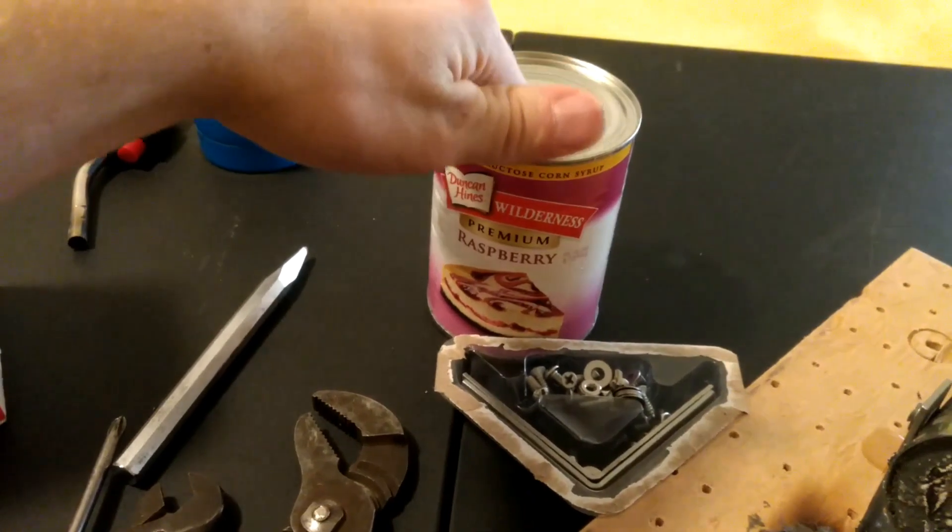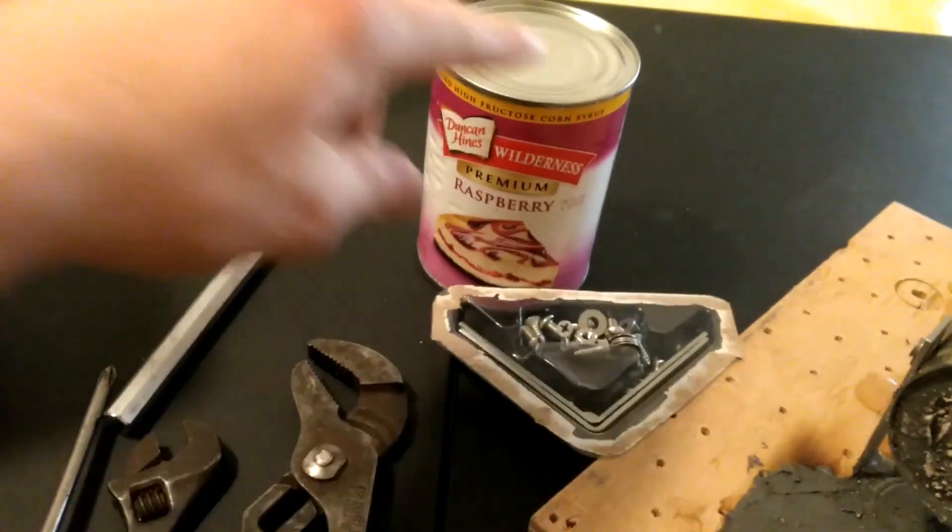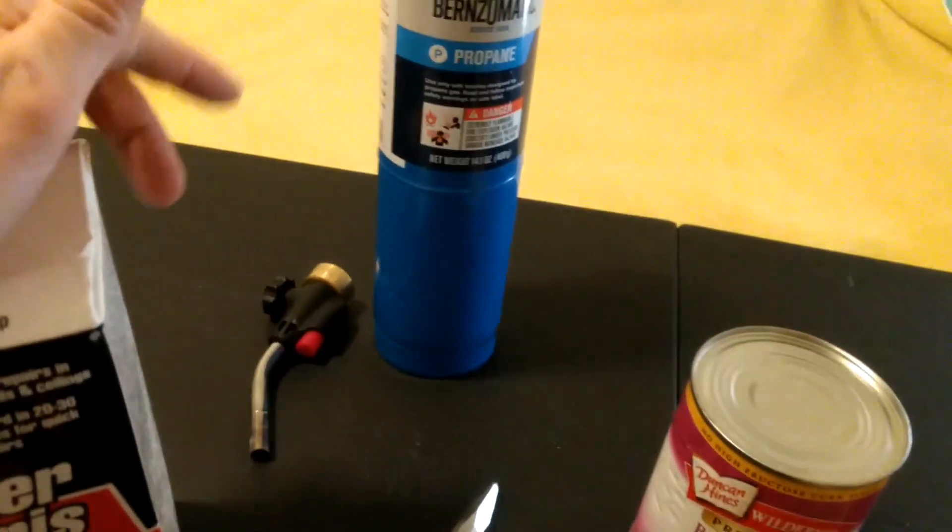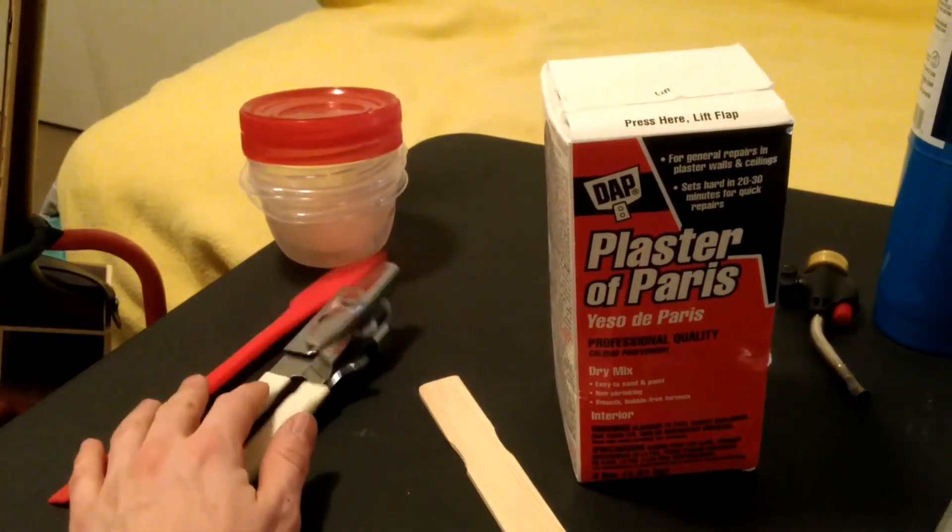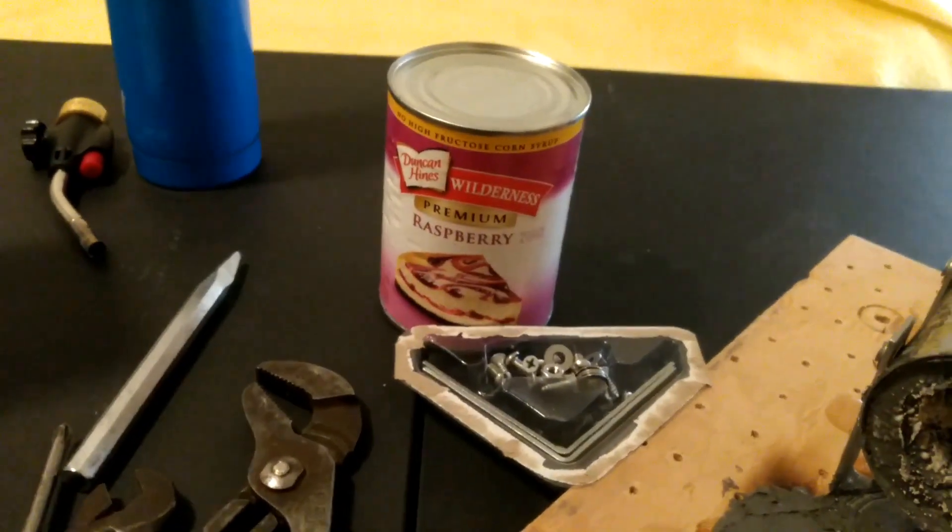A can. It doesn't have to be raspberry, but raspberry is a good choice. It could also be pumpkin. That was the season. You've got a propane torch, plaster Paris, and the tools. And then over here we've got just some containers so I don't have to waste the raspberry filling.